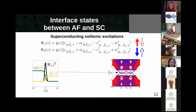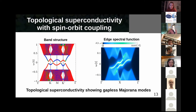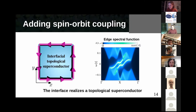So far we have our solitons, our gapless states. Now the only thing we have to do is open a gap in them. The idea is that if you switch on some small spin-orbit coupling — either in the antiferromagnet, in the superconductor, or everywhere — these solitonic modes open up a gap. This gap is actually topologically non-trivial and gives rise to a topological superconductor with a finite Chern number, with one-dimensional Majorana modes going around the edge of the interface.